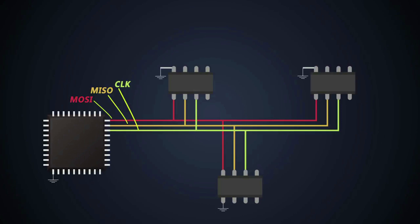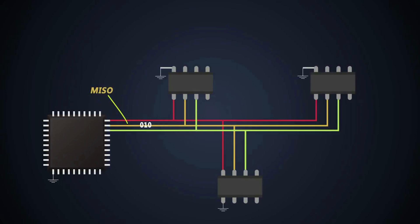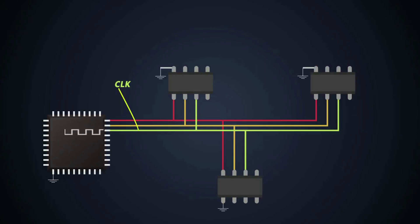MOSI means the master sends data to the slave and the slave receives that data. On the MISO line, the slave sends data and the master receives it. The clock in the communications is very important for synchronization. The master initiates the clock signals and all slaves receive the same data as per the clock signal. And finally comes the chip select line.